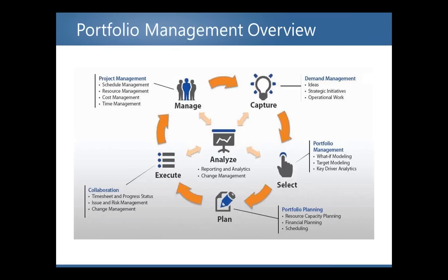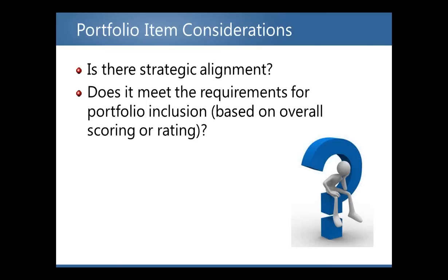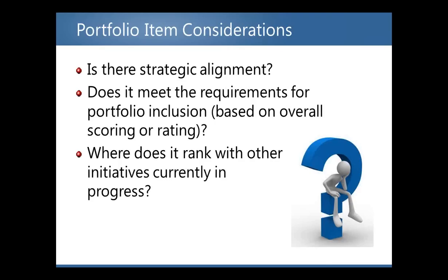Most of us, when new demand comes in, we raise our hand and say we'll get it done. But there are some important steps to consider before that work is accepted into the lifecycle. In the portfolio management cycle, the following general questions will be asked for every item in your portfolio: Does the project or work initiative align with the organization's strategic objectives and goals? If the answer is no, it should not be considered for execution. Based on defined key performance indicators and probable risk, does this project meet the requirements for portfolio inclusion? And where does it rank with other initiatives currently in progress? We can't just accept all work when new demand comes in — we need to analyze it against what's currently going on to make the proper decision whether we should move forward.